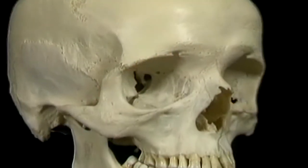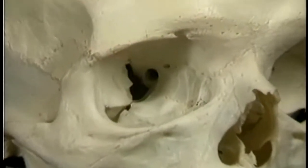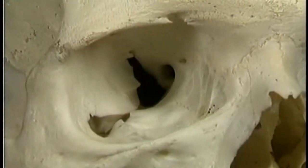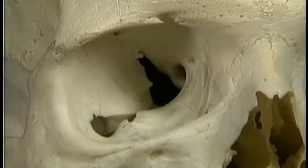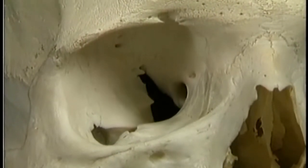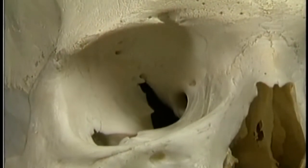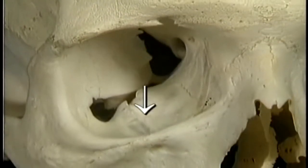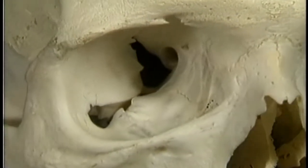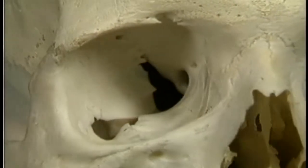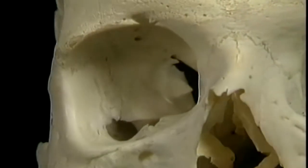Let's start with the bones. This is the bony orbit or orbital cavity. It's described as having a roof, a floor, a medial wall, and a lateral wall.